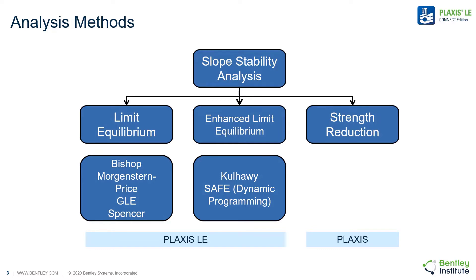As a refresher, if we look at slope stability analysis as a whole, we have really three methods adopted in industry. We have the standard Limit Equilibrium method — your Bishops, Morgenstern-Price, and GLE methods. On the finite element side, we have methods that can be done in Plaxis software using the Shear Strength Reduction method. And in the middle zone we have the Enhanced Limit Equilibrium, typically called the Col-Hallway method, where we pull in stresses from a finite element analysis and use Limit Equilibrium method of slices to determine our factor of safety. It's a nice joining between the two different methods, and we can learn something from this hybrid approach.